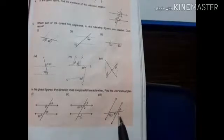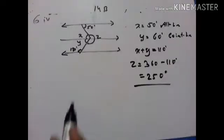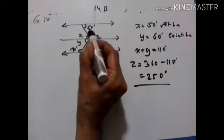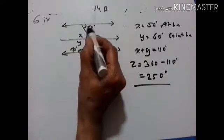A is equal to 180 minus 120 — these two are co-interior angles. Therefore, A is equal to 60. If A is 60, then B is also 60 — vertically opposite angles. This is 120, so C is 120 — corresponding angles. X is 120 — corresponding angles.